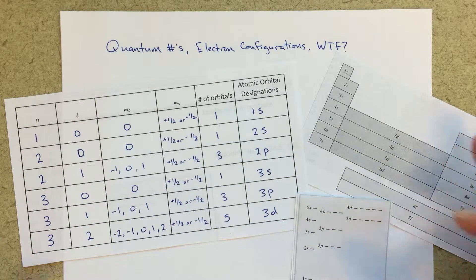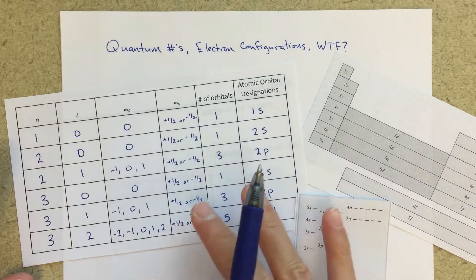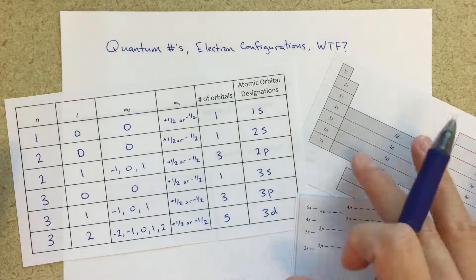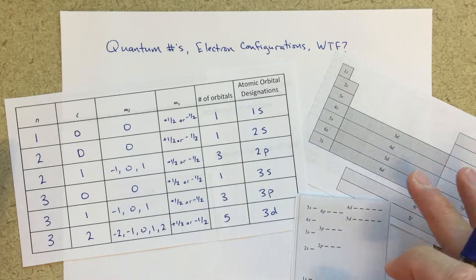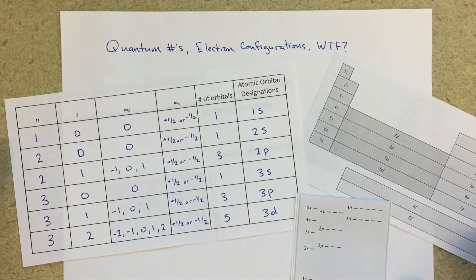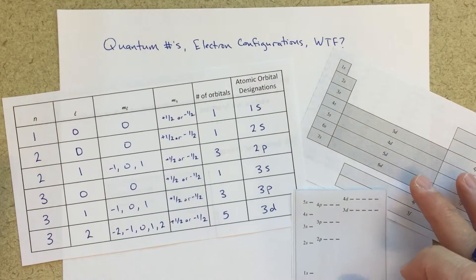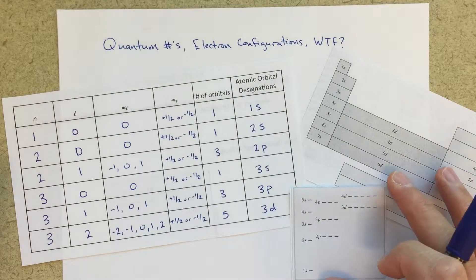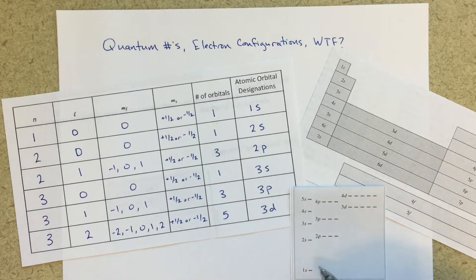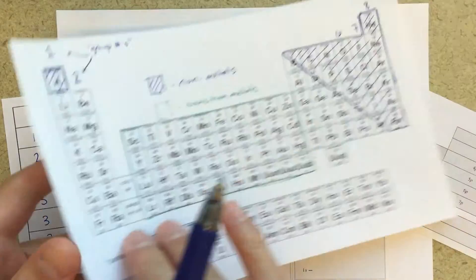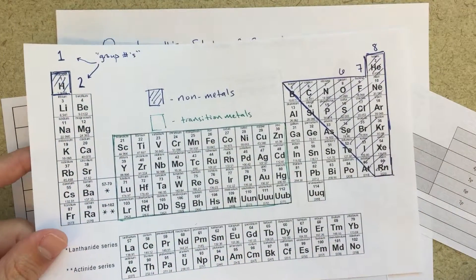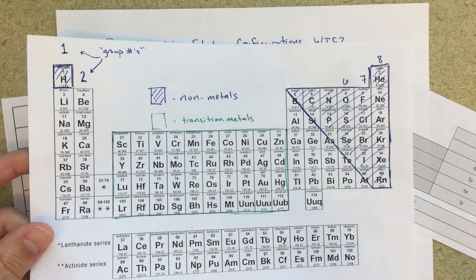So we've got all these tables here. I've got my quantum numbers table, I've got this little graph that I've been talking about in class a lot that I really like and we'll talk about what that means. We've got this electron configuration table that we'll talk about filling in, and we've got a periodic table that we'll talk about as well.